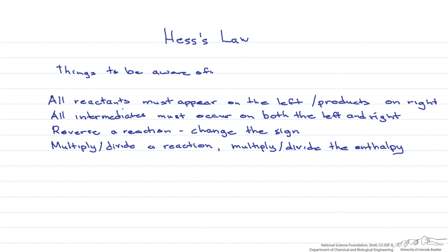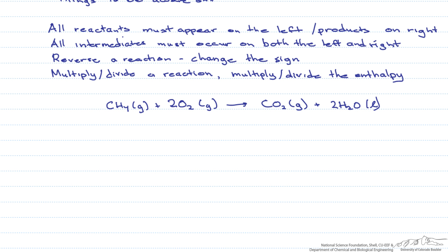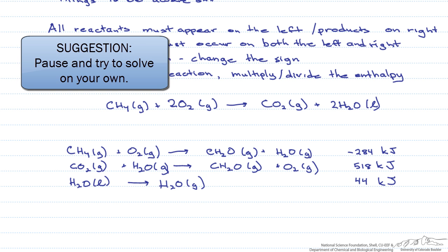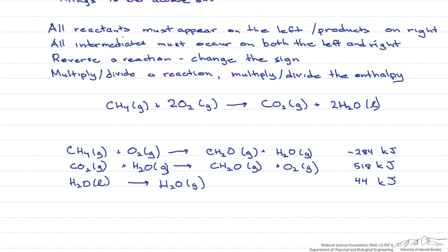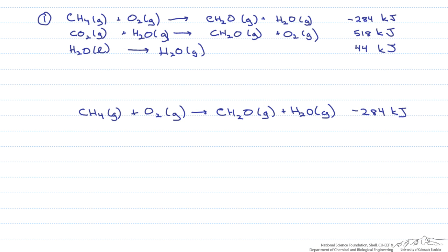So let's look at an example. Let's say we want to find the heat of reaction for the combustion of methane. We're given the following reactions and their enthalpies, and we're going to use them to figure out what the enthalpy of reaction is for the combustion of methane. Reaction one gives us the methane on the correct side and in the correct amount, so we'll leave it and its enthalpy the way it is.